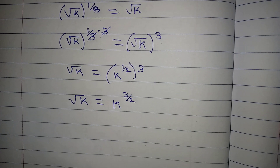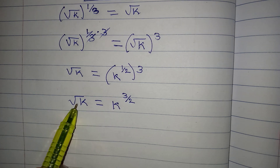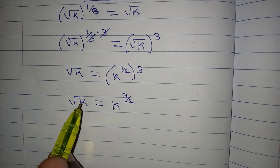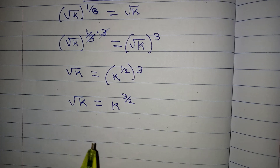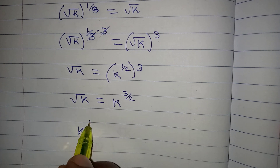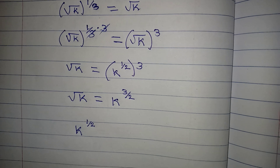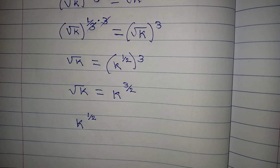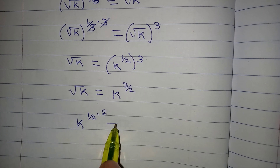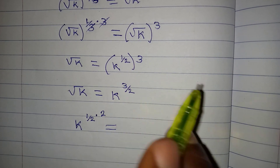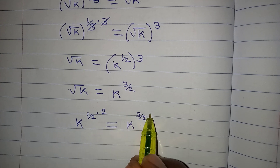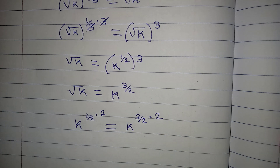We also need to remove this square root from the left side. The square root of k is k to the power of 1/2. To remove it, we multiply the exponent by 2, and this 2 is also reflected on the right-hand side, so we have k to the power of 3/2 multiplied by 2 as well.